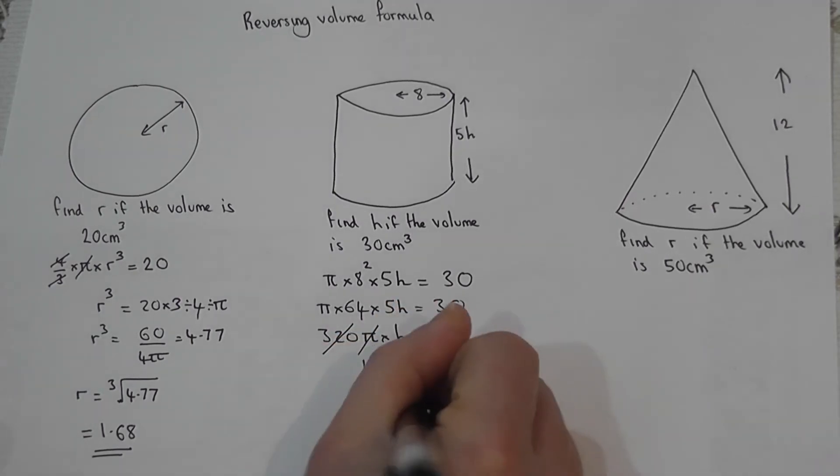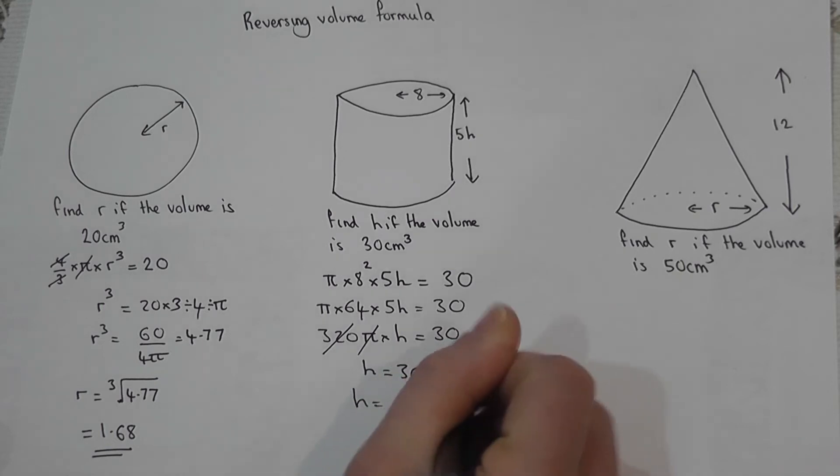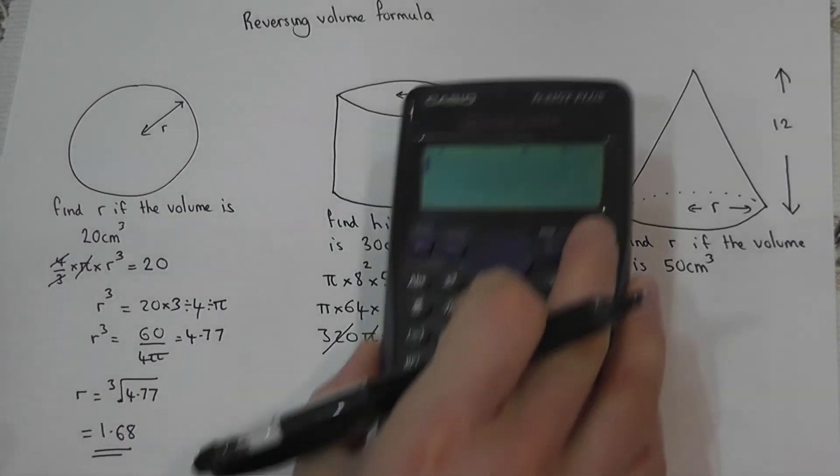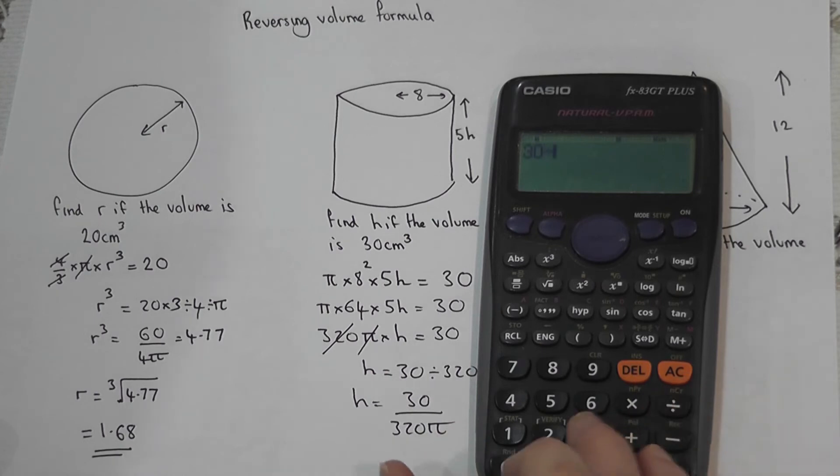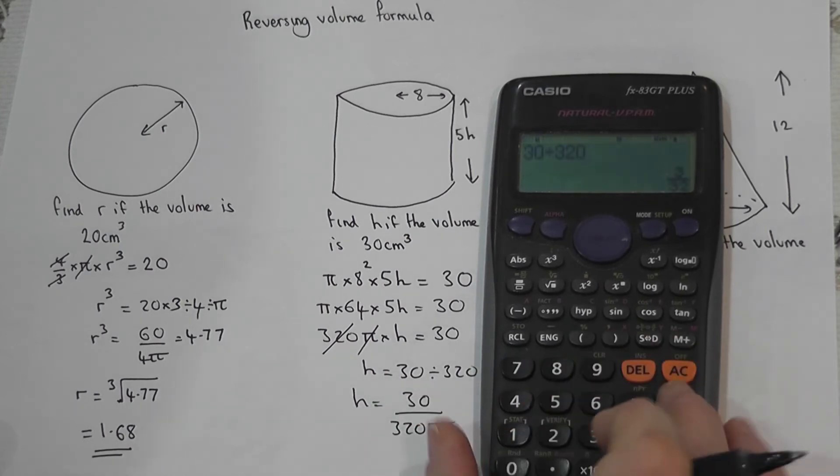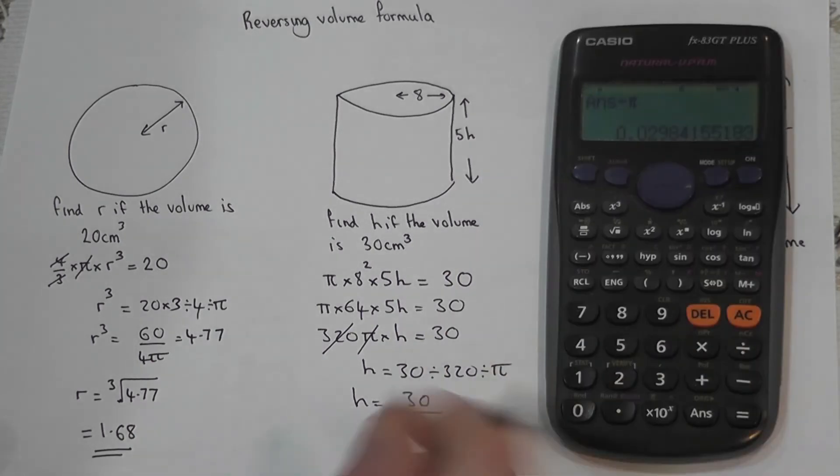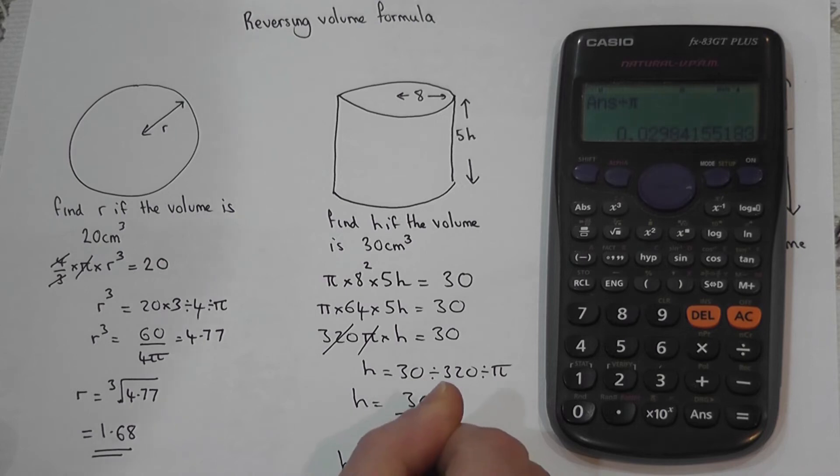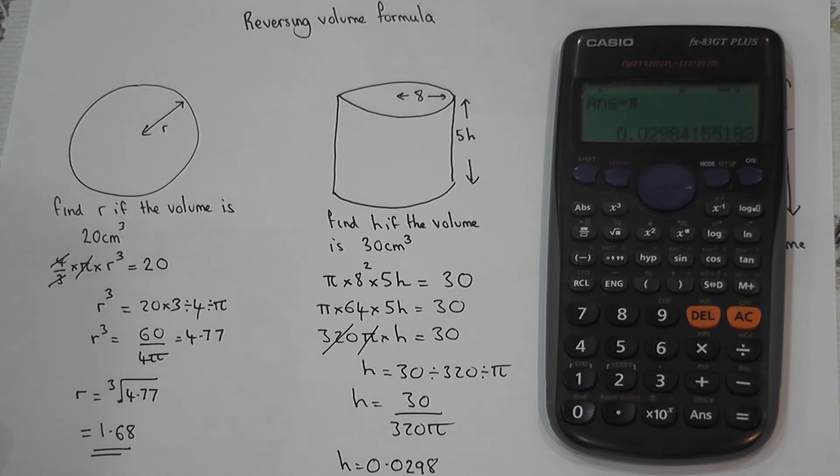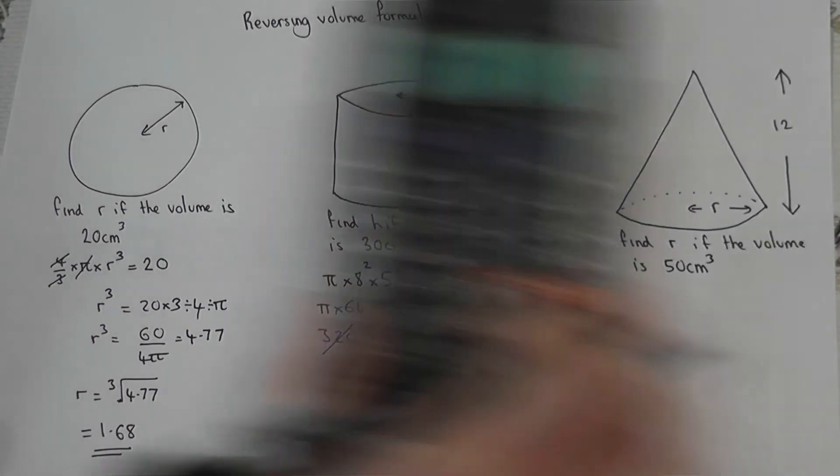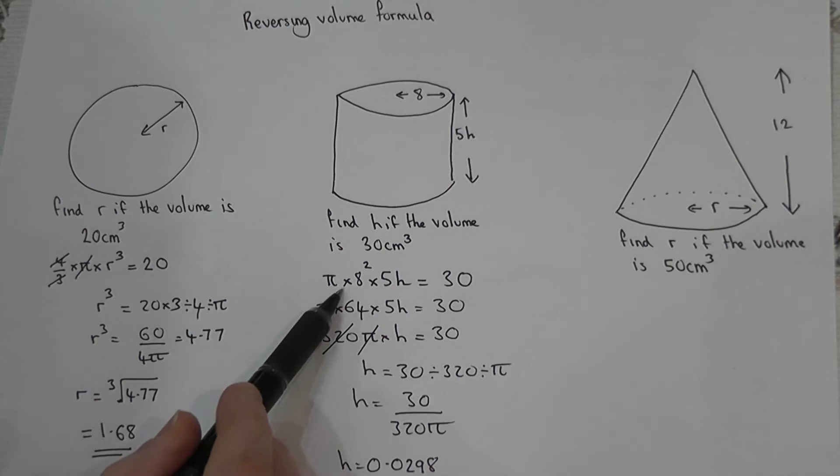Or h equals 30 over 320 pi. On a calculator I can enter 30 divided by 320 divided by pi, and I get quite a small value: h equals 0.0298 to three significant figures. Again, I can always check the answer by doing pi times 8 squared times 5 times by 0.0298, and indeed we're going to get the answer 30 if we work it through.